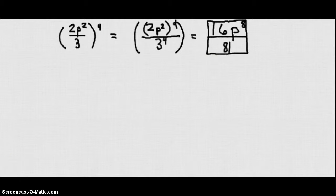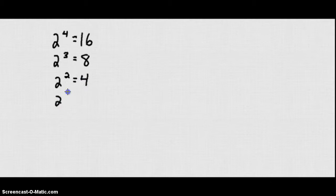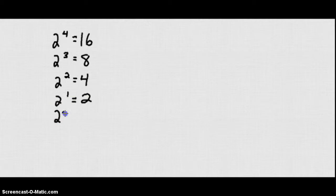Now we want to talk about negative exponents. Recall that 2 to the fourth is 16, 2 to the third is 8, 2 squared is 4, and 2 to the first is 2. So what would you expect 2 to the zero power to be?